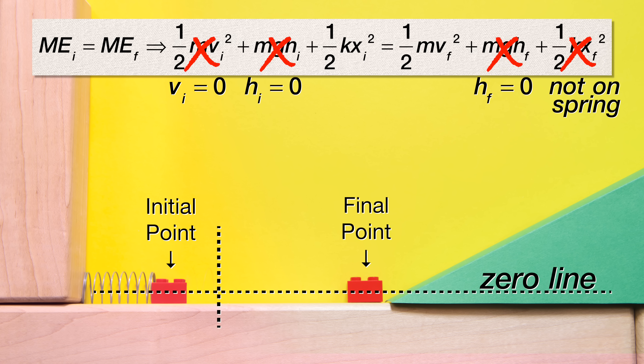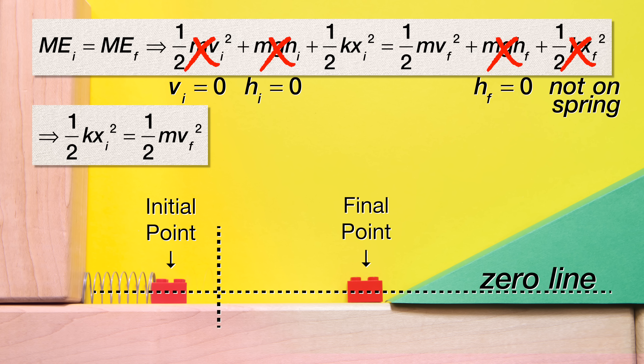Therefore, we are left with one half times the spring constant times the initial displacement of the spring squared equals one half times the mass of the block times the final velocity of the block squared.